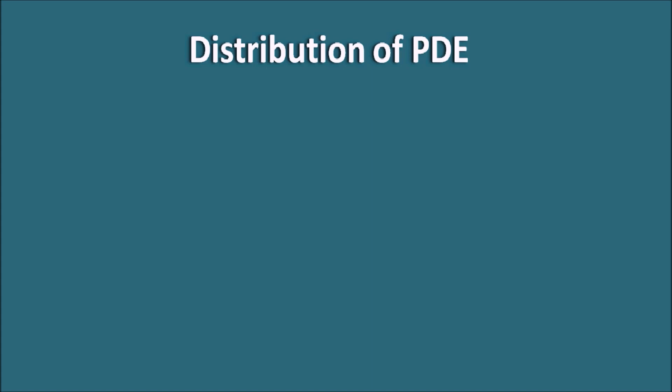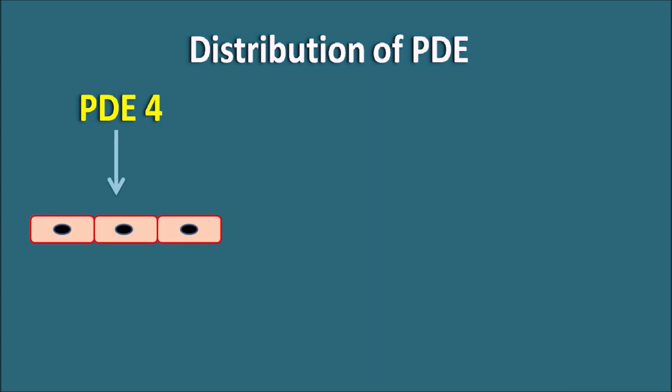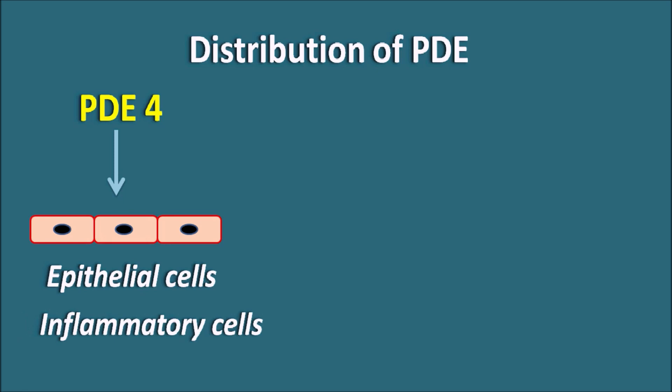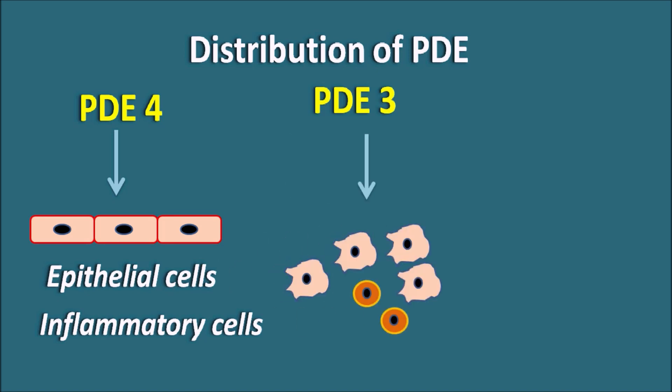Phosphodiesterase enzymes are widely distributed, and some organs express more than one type. Three important examples: PDE type 4 is mainly present on epithelial cells and inflammatory cells like T lymphocytes, where it is responsible for increasing inflammation. PDE type 3 is present in macrophages, monocytes, immune cells, and cardiac cells. PDE type 5 is present on vascular smooth muscle and bronchial smooth muscle.